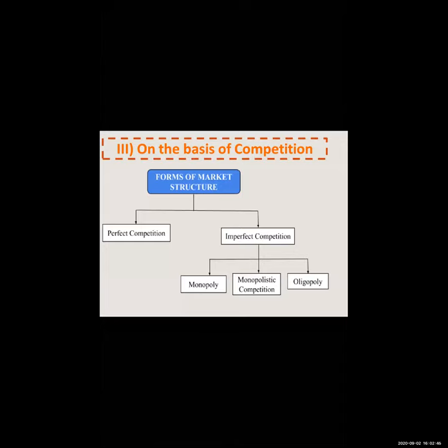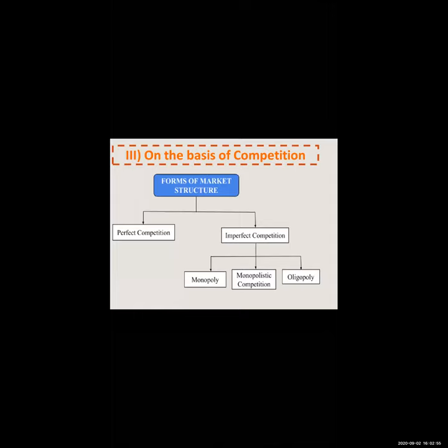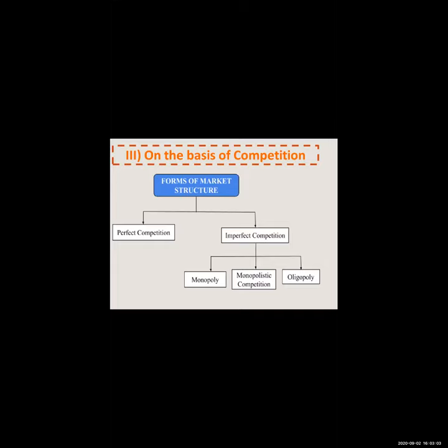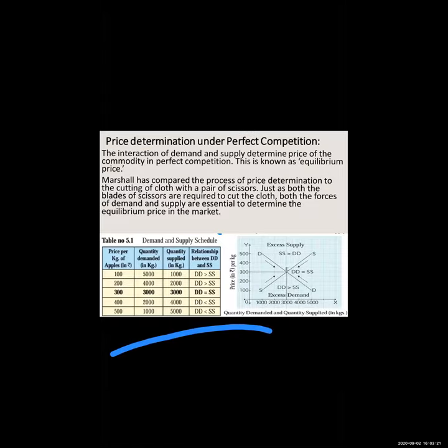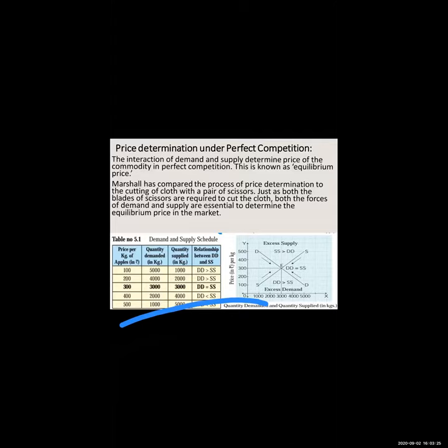As you all mentioned single price — in the last lecture we discussed that the seller is a price taker. Whatever price has been fixed in the market, the seller will sell at that price and the buyer has to purchase at that price. This single price is determined by the interaction of the demand and supply curve. Today we are going to analyze price determination under perfect competition. Marshall has compared the process of price determination to the cutting of cloth with a pair of scissors. You have to write the introduction, draw the table, explain the table, and then draw the diagram in detail.